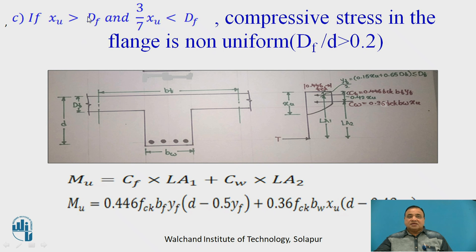Next, if Xu is greater than Df and 3 by 7 Xu is less than Df, in this particular case compressive stress is non-uniform. It is in the flange but it is not uniform. Therefore, in this particular case you are supposed to find out Yf. Yf is 0.15 Xu plus 0.65 Df. It should not be greater than Df. Here you will find a non-uniform stress in the flange, compressive stress in the flange. Therefore, Mu equals Cf into LA1 plus Cw into LA2.